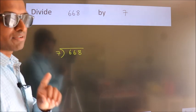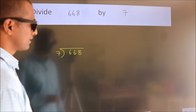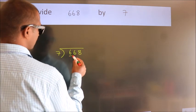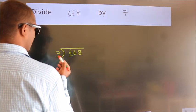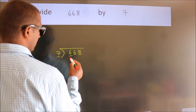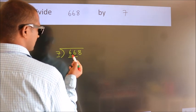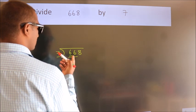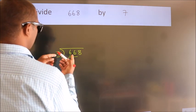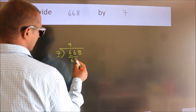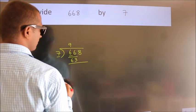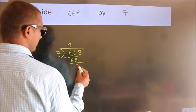Next, here we have 6, here 7. 6 is smaller than 7, so we should take two numbers: 66. A number close to 66 in the 7 table is 7 nines, 63. Now we should subtract, we get 3.